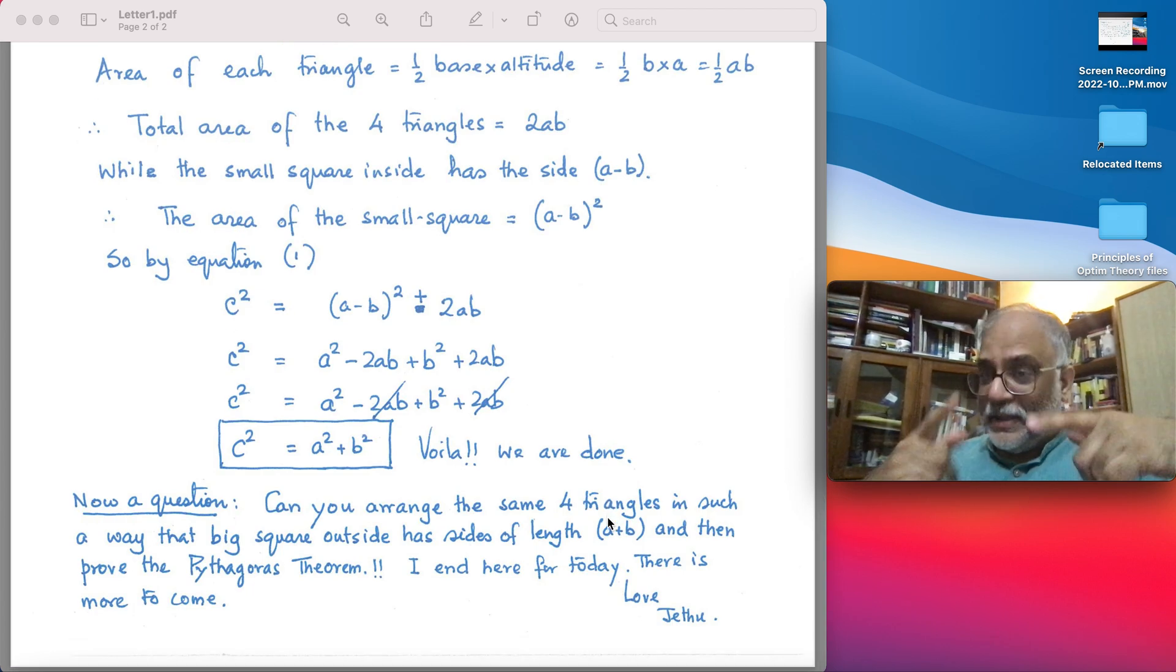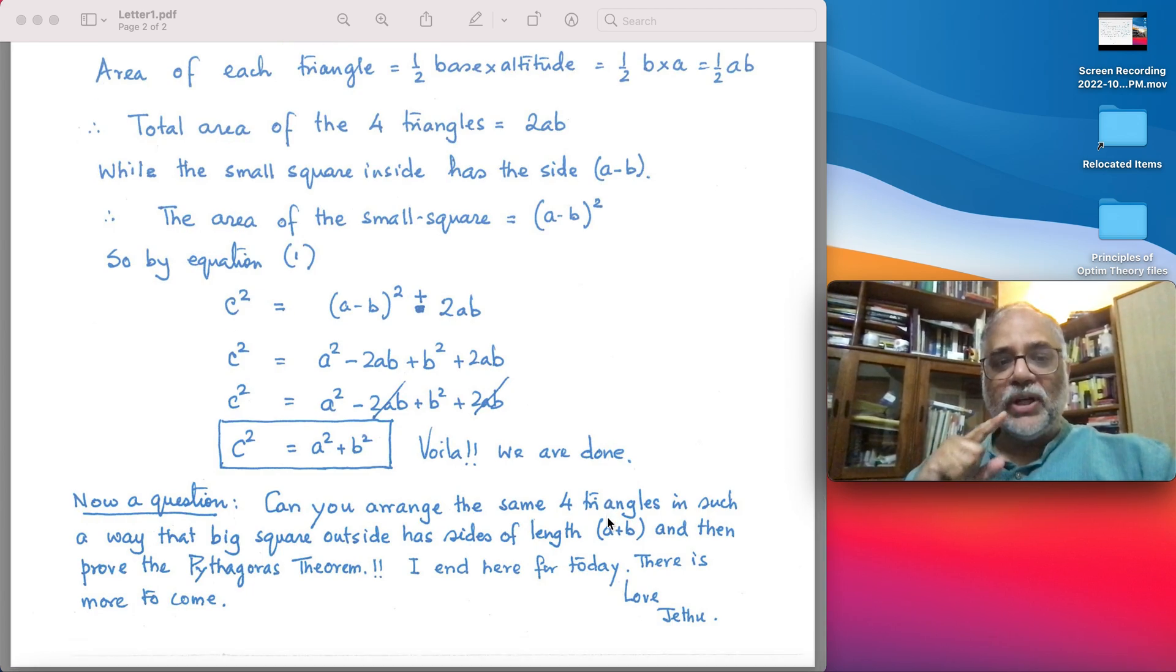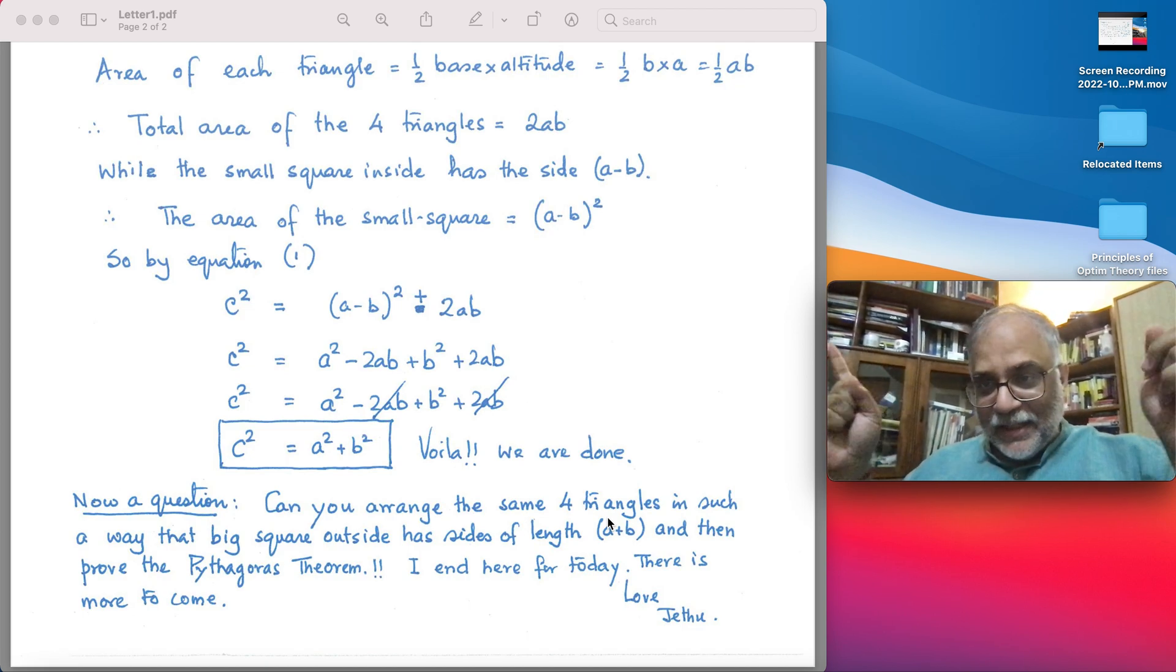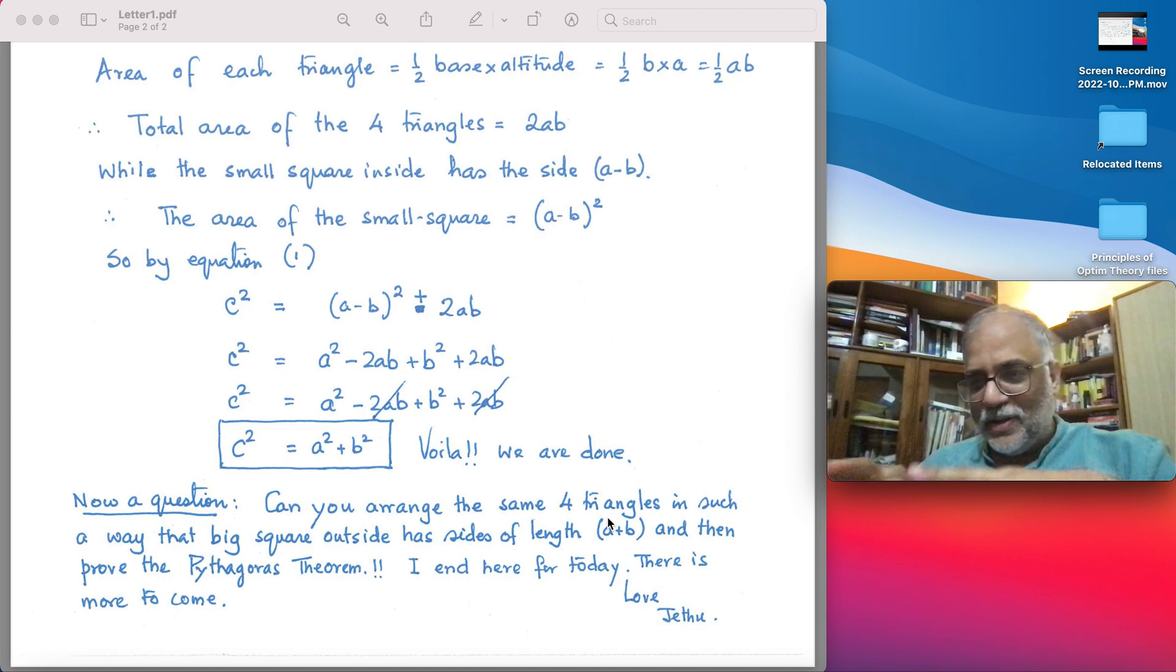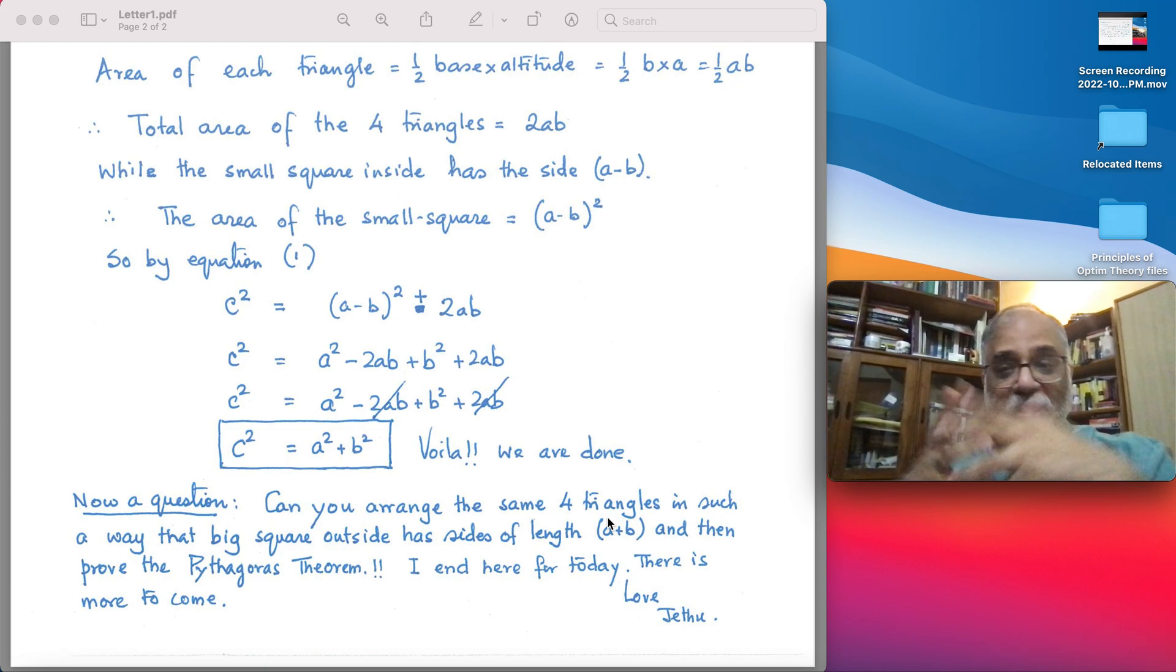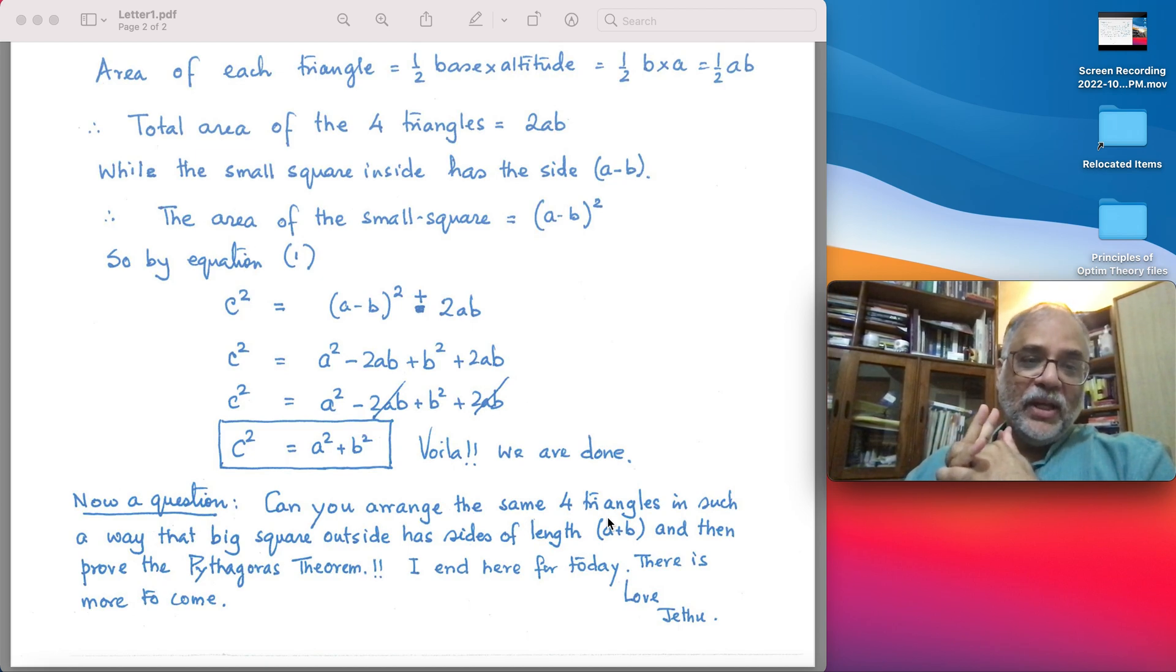Now, can you arrange those same four triangles in such a way that the big square outside has a length a plus b? You will find it—obviously you can search at Google—but here's a question I've asked my nephew: Can you arrange the four triangles in such a way that the big square outside has sides of length a plus b, and then prove the Pythagoras theorem?